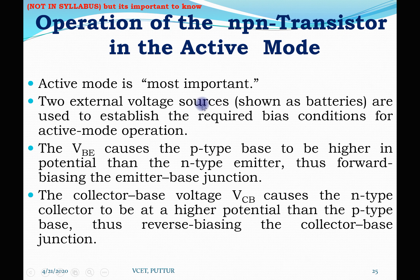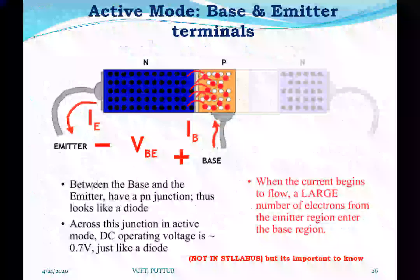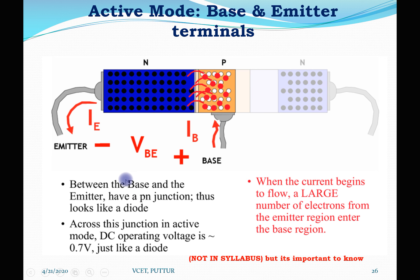In active mode, VBE causes the P-type base to be at higher potential than the N-type emitter, forward biasing the emitter-base junction. VCB causes the N-type collector to be at higher potential than the P-type base, causing reverse bias of the collector-base junction. Considering only the forward bias section: between the base and emitter we have a P-N junction acting like a diode. Across this junction in active mode, the DC operating voltage is 0.7 volt, just like a diode.